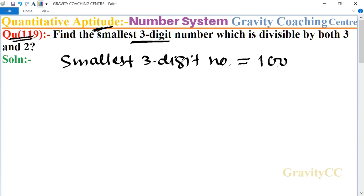Here 100 is divisible by 2, but it is not divisible by 3, because its sum of digits, 1 plus 0 plus 0, is equal to 1.